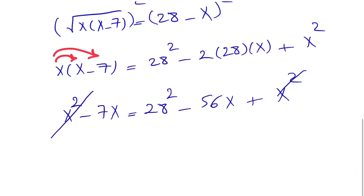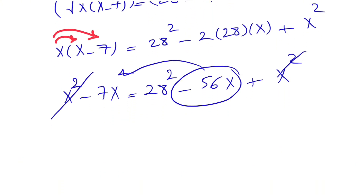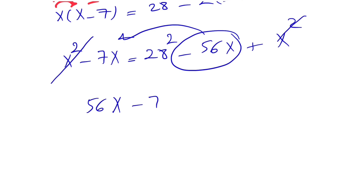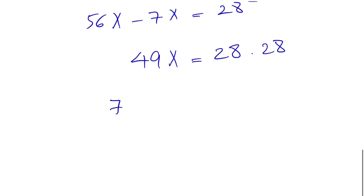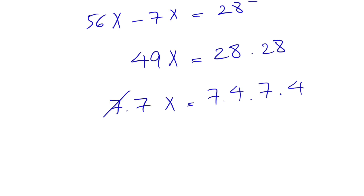We can cancel out the x squared on each side. When minus 56x goes to the other side it becomes plus 56x. So we have 56x minus 7x equals 28 squared. That gives us 49x equals 28 squared. Now 49 is 7 times 7, and 28 is 7 times 4. So we have 7 times 7 times x equals 7 times 4 times 7 times 4. We cancel out the 7s on each side, leaving us with 7x equals 4 times 4, which is 16. So x equals 16.